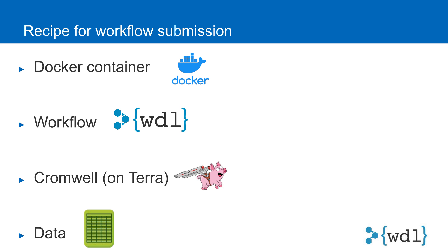There are four things you need to successfully run a WDL workflow in Terra. First is Docker, a portable package of software and all its dependencies. Second is a workflow written in WDL. Third is an execution engine for running the WDL — in this case Terra uses Cromwell. Finally, the fourth is your input data.